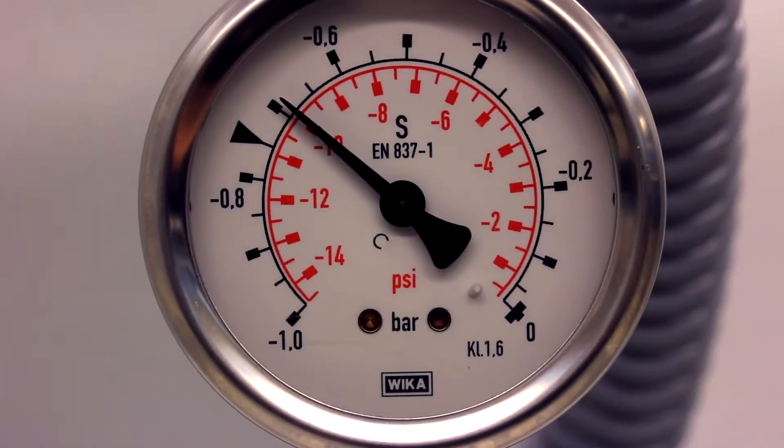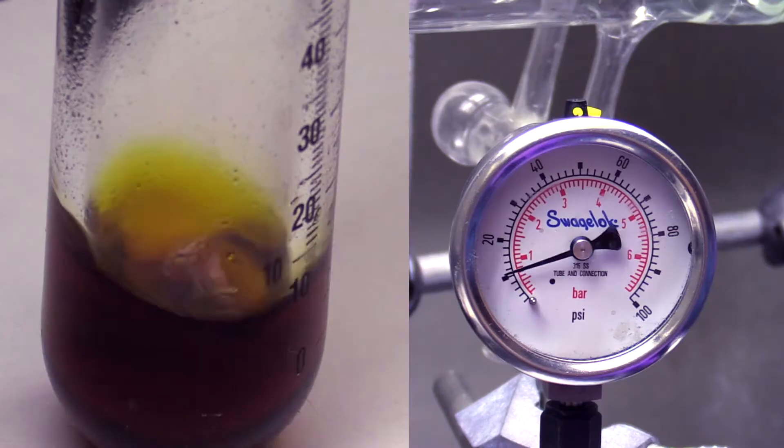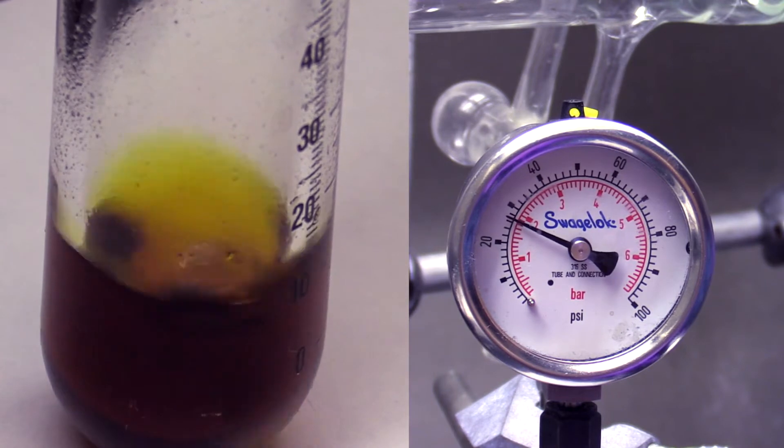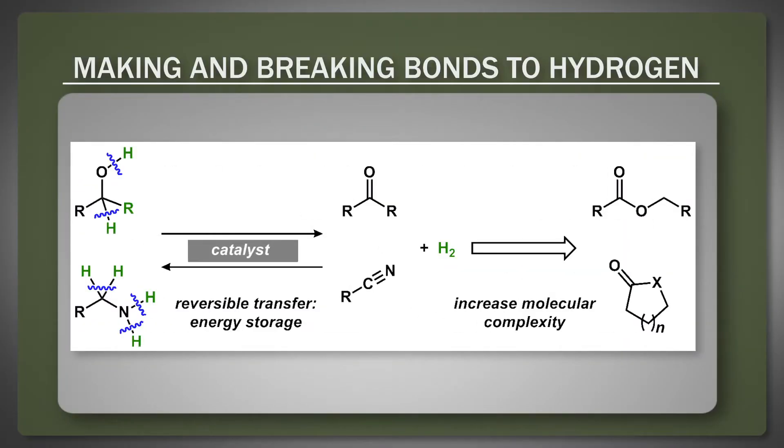One of the overarching goals of this approach is to be able to make and break chemical bonds to hydrogen at will, either to store energy or alternatively to construct more complex molecules from widely available chemical feedstocks.